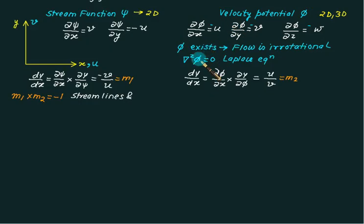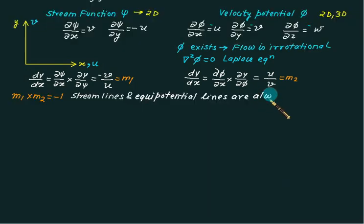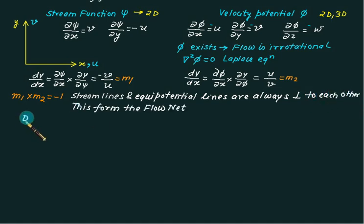Phi (φ) exists only for irrotational flow, and del-squared φ is the Laplace equation. The slope of a streamline is dy/dx = m1 = -v/u, and the slope of the velocity potential line is m2 = u/v. Since the product of the two slopes m1 and m2 equals minus one, we conclude that streamlines and equipotential lines are always perpendicular to each other.